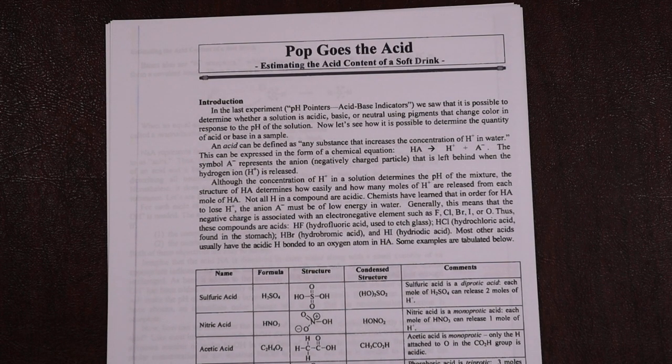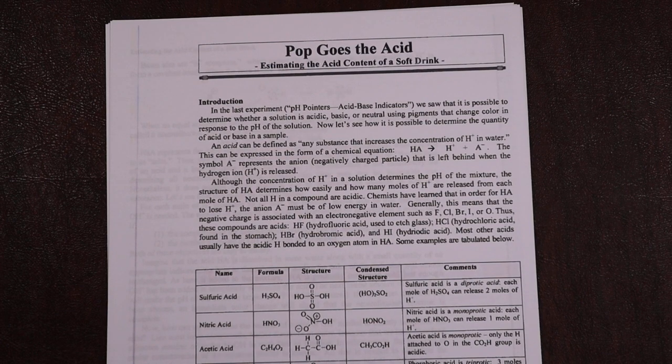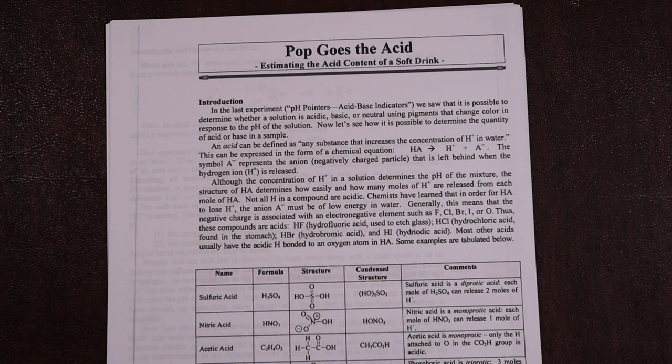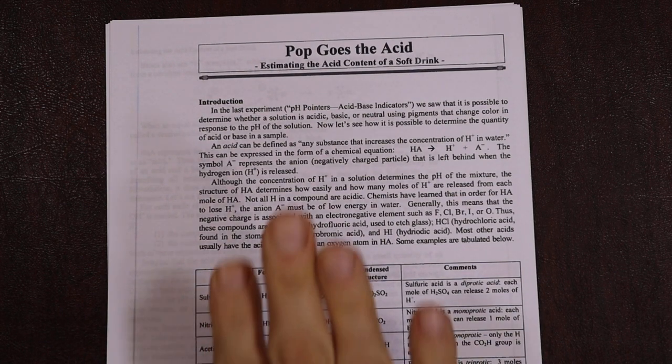When you do a titration, you're actually making a chemical equation balance. If it's a one-to-one ratio, you add exactly one mole and one mole. There's a special technique we can use to do this called titration. Before we get into the details, I want you to go away and hopefully have some time and read through this experiment. It does have some details which I want you to read before we get into this in too much detail.